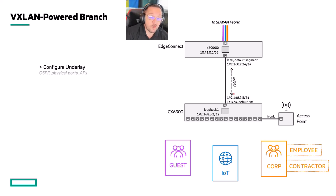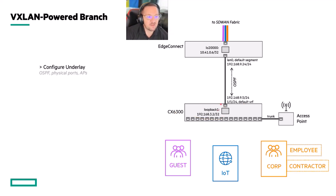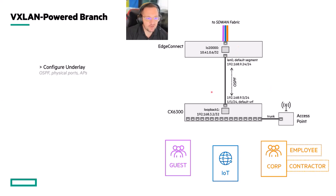We're going to run OSPF. The reason we want to run OSPF here is so that the CX switch will know about the EdgeConnect loopback, and the EdgeConnect will know about the CX loopback. You could just use static routes — go to the CX and say if you want to get to 10.41.0.6, go to this port — but we want to do it properly, and using OSPF for the underlay is the right way to do it. So first, you set up OSPF.